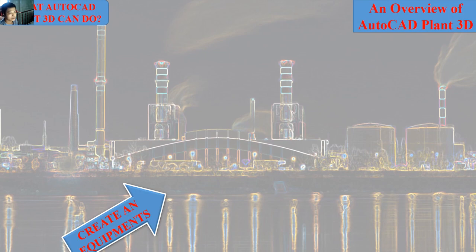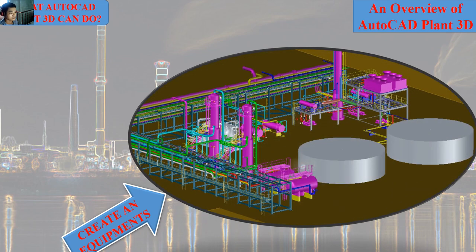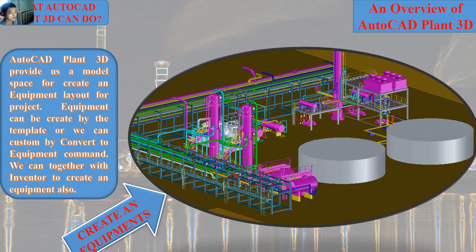Number three is creating equipment in model space. AutoCAD Plant 3D provides a model space for creating an equipment layer for the project. Equipment can be created by template or by command. Plant 3D can also work together with Inventor to create equipment for Plant 3D.